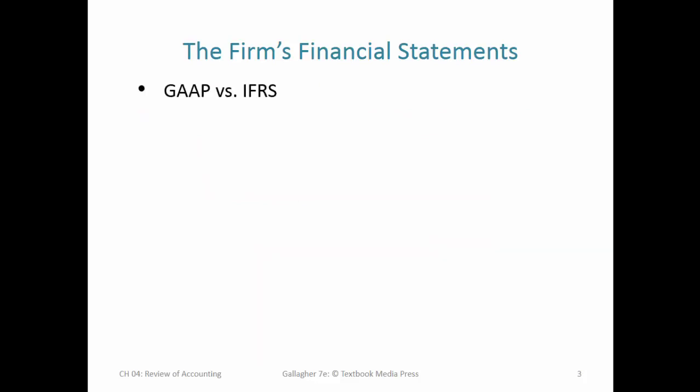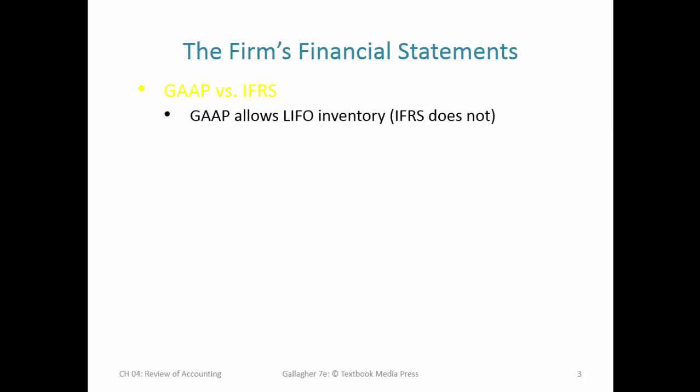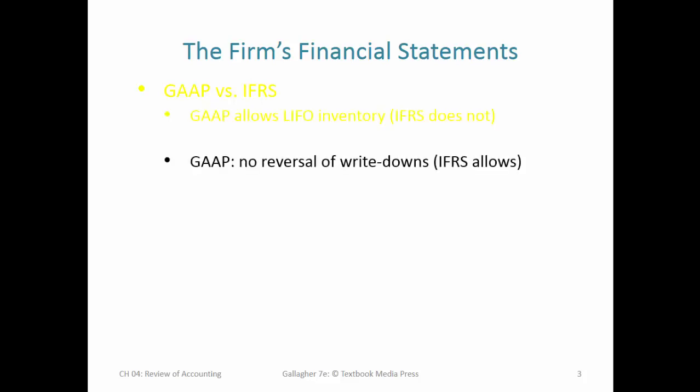They are actually mostly the same but there are a few differences. For example, GAAP allows for LIFO, which is last-in first-out inventory accounting, and IFRS doesn't. GAAP does not allow for reversal of write-downs whereas IFRS does, and those are just two of the bigger differences.